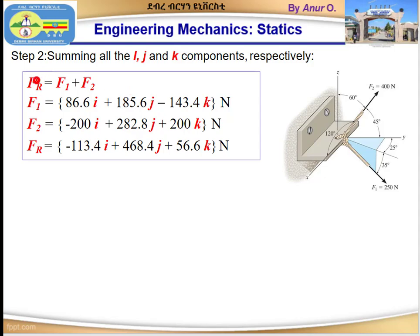The resultant force FR equals F1 plus F2. F1 is 86.6i + 185.6j − 143.4k N, and F2 is −200i + 282.8j + 200k N. Adding the components: (86.6 − 200)i = −113.4i, (185.6 + 282.8)j = 468.4j, and (−143.4 + 200)k = 56.6k. Therefore FR equals −113.4i + 468.4j + 56.6k newtons.